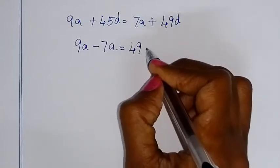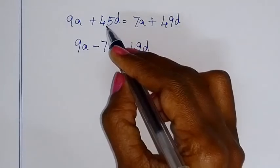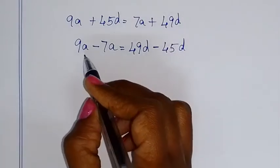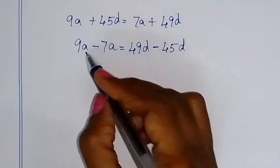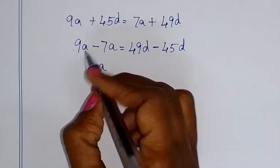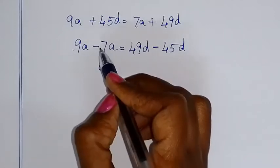Two like terms and two like terms. The terms are solved using integer addition rules. When two symbols are the same, we add. When subtracting, take the greater number's symbol.